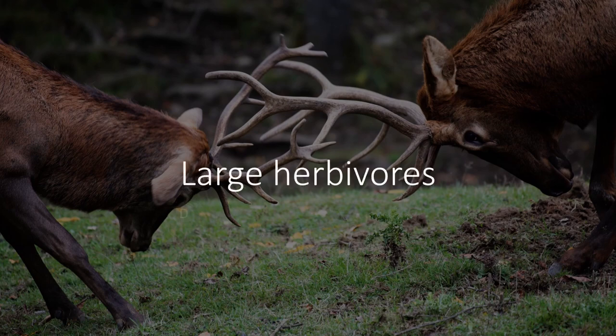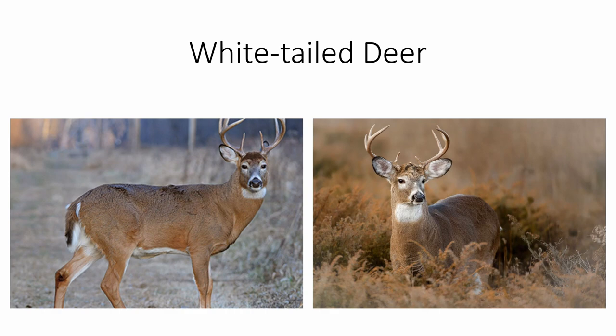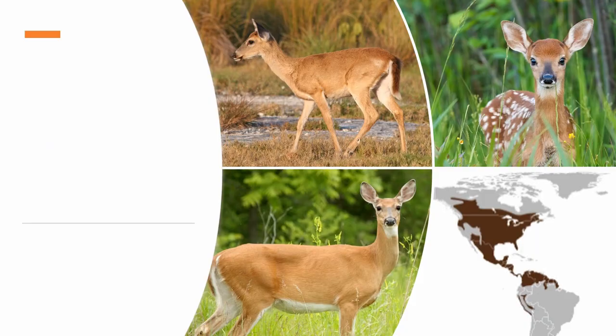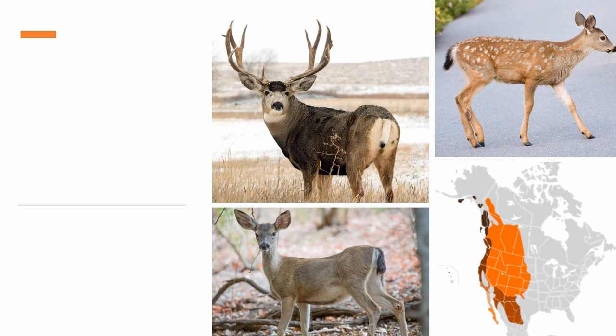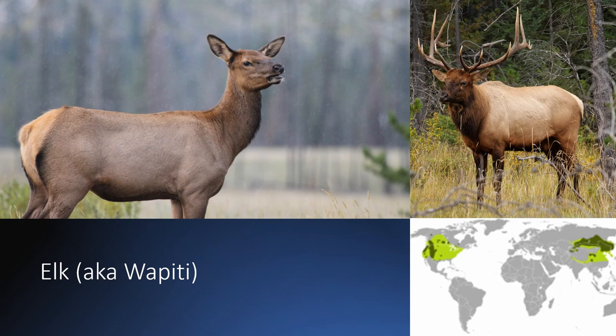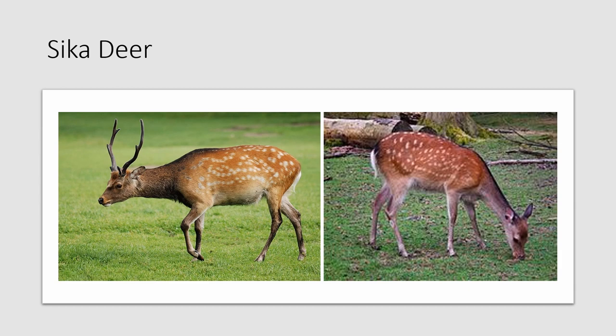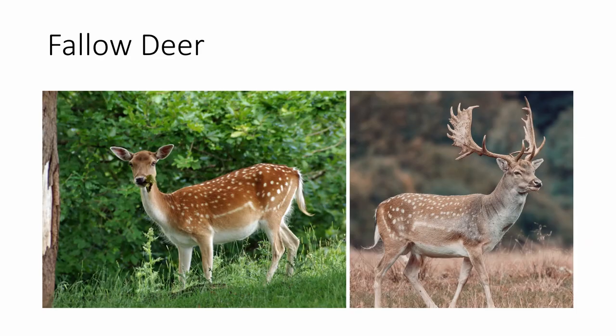Today we're going to learn how to identify some species other than squirrels. We're starting with large herbivores, which includes both deer and cattle species, as well as a few other species groups like pigs. There are also several introduced species in this grouping, and depending on the area — I'm looking at you, Texas — you will find these animals, so I'm including them.